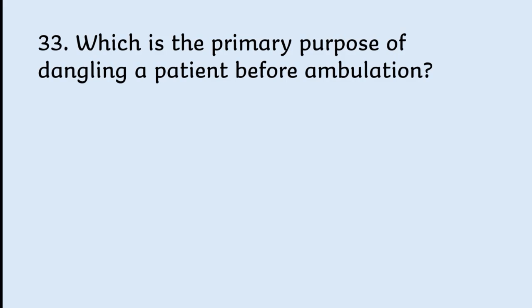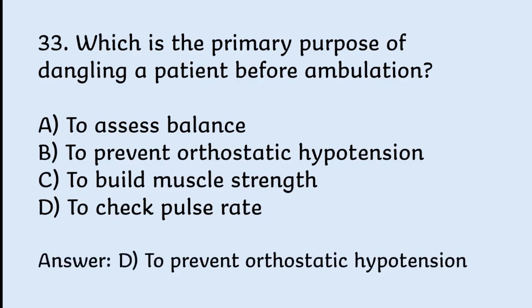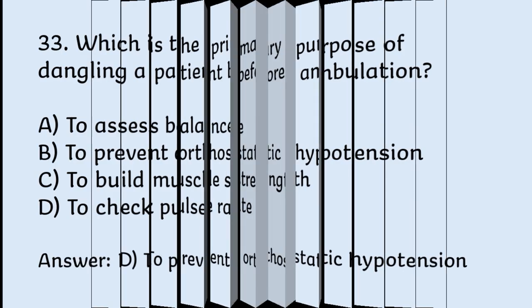What is the primary purpose of dangling a patient before ambulation? Options: to assess balance, to prevent orthostatic hypotension, to build muscle strength, to check falls rate. Correct answer is to prevent orthostatic hypotension.